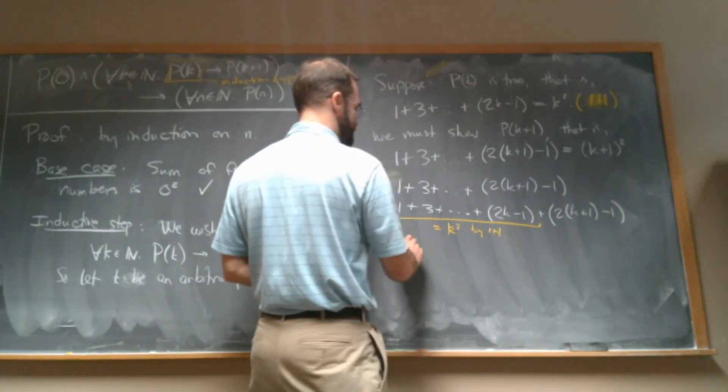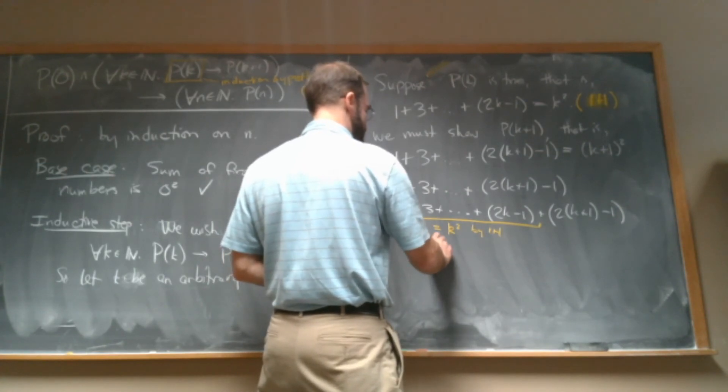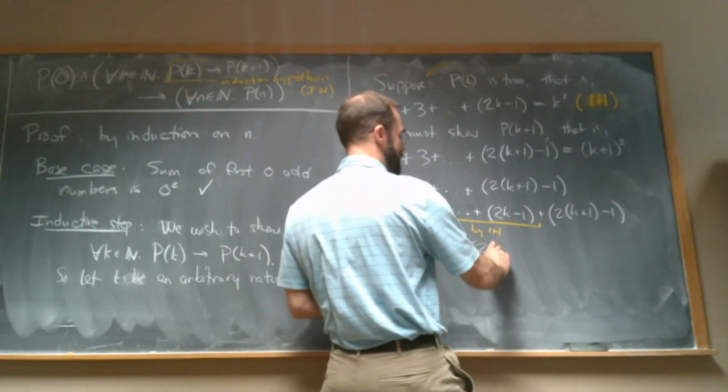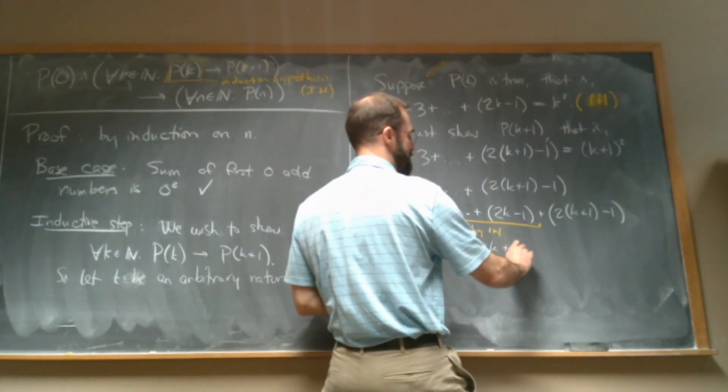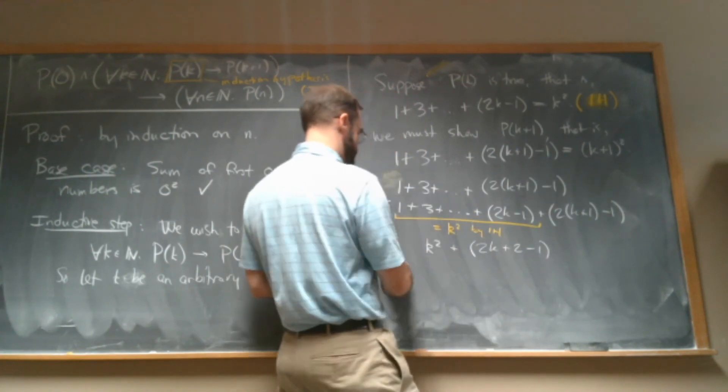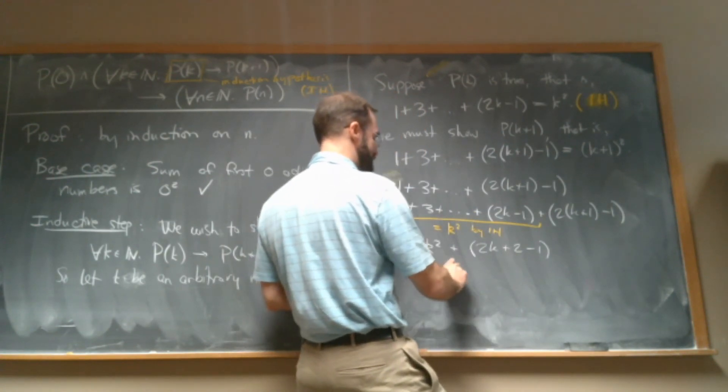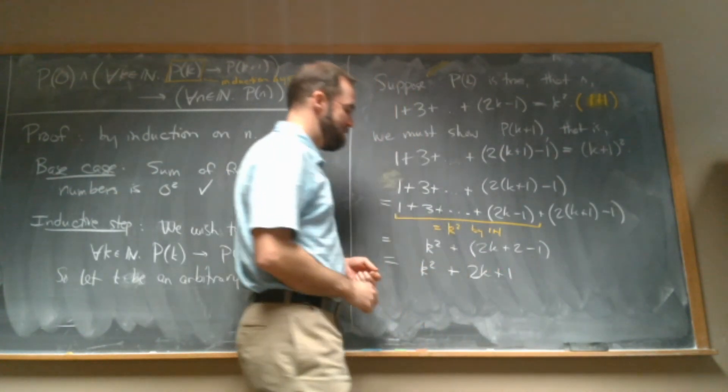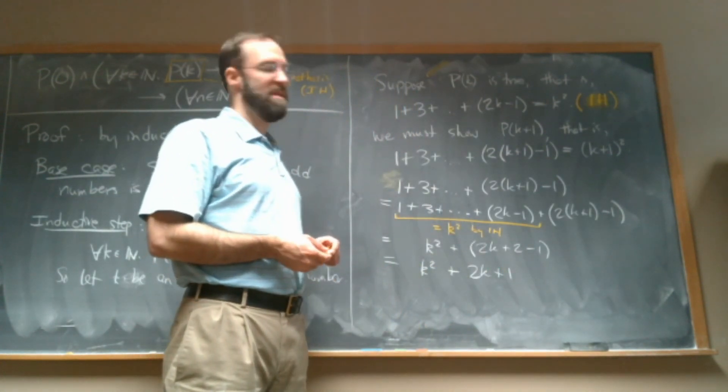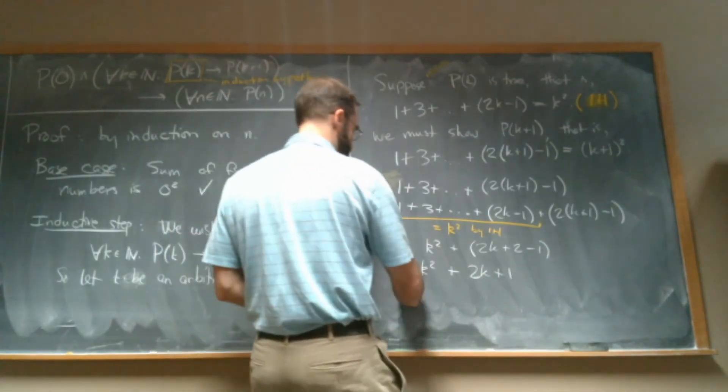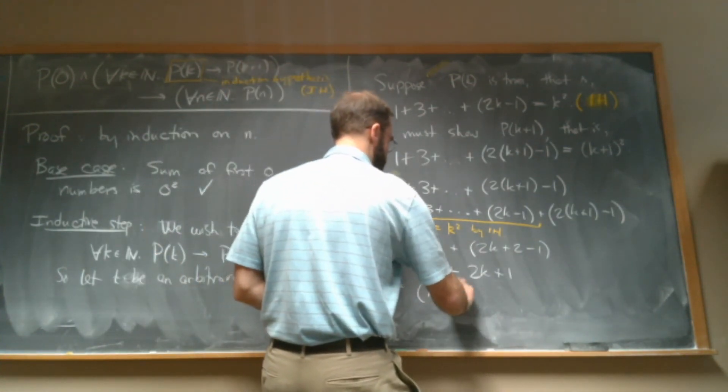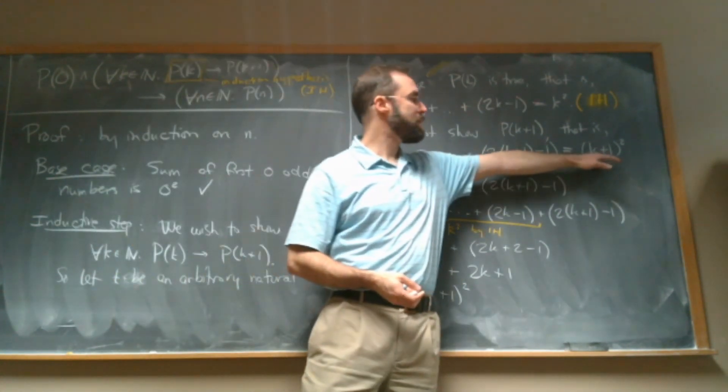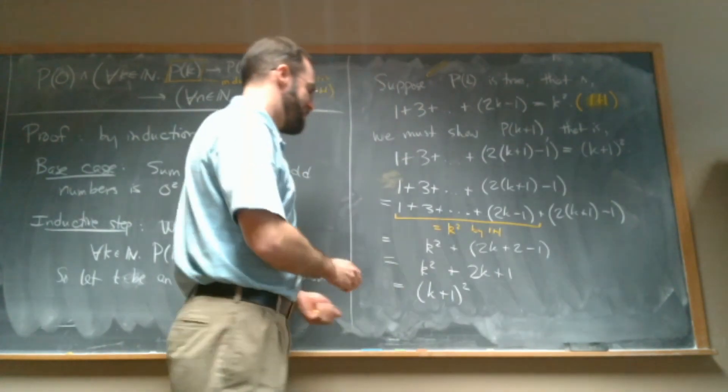Okay. So this is equal to k squared plus 2k plus, and we're going to do a little bit of algebra here to simplify this. 2k plus 2 minus 1. All right. So this is equal to k squared plus 2k plus 1. And of course we can factor this as (k+1) squared, which is exactly what we wanted to show, right? This is what we were trying to show.